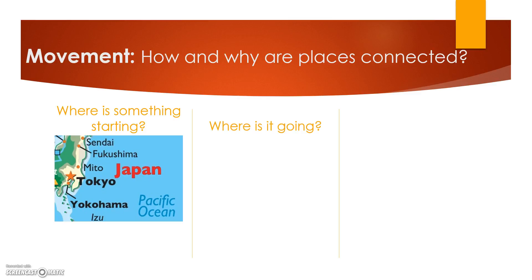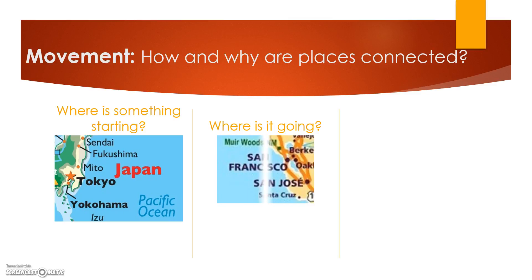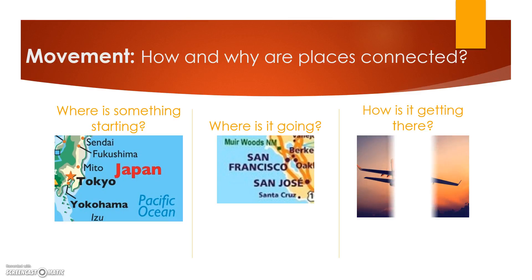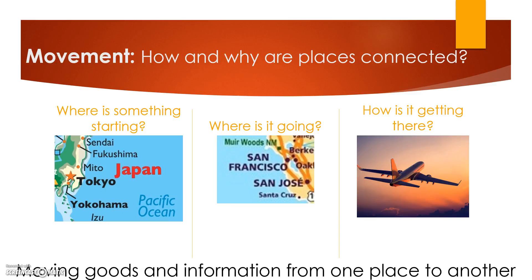The next thing we have to figure out is where is it going? So where are our socks from Tokyo going to be sent? Let's say San Francisco. We're answering the question of how is it going to get there — it's going to have to be either by a cargo ship or airplane, because of the distance and the fact that there's an ocean between them. Moving goods and information from one place to another is probably the easiest way to describe what movement is all about.